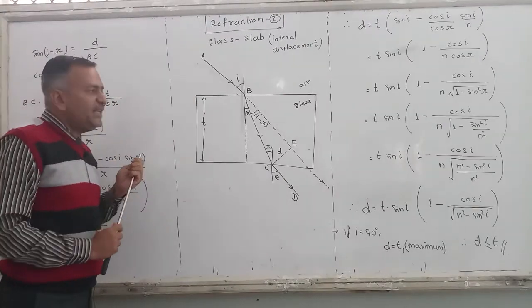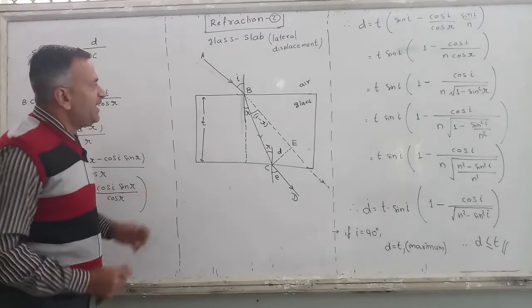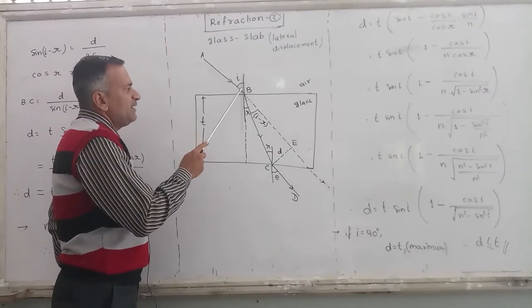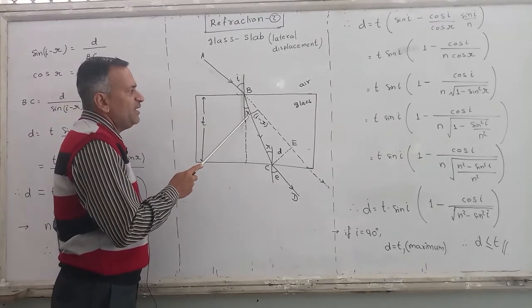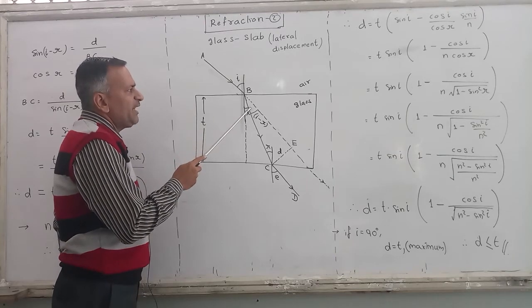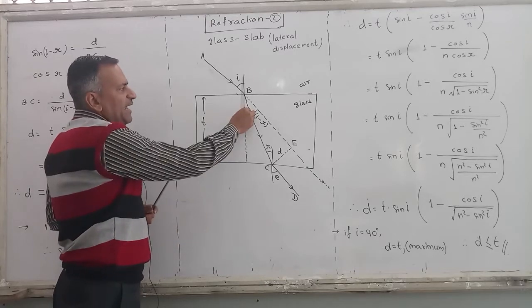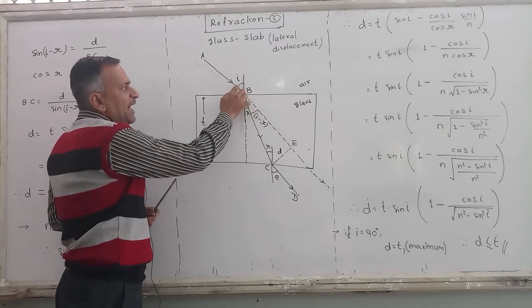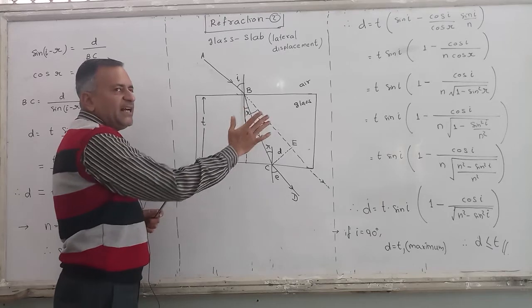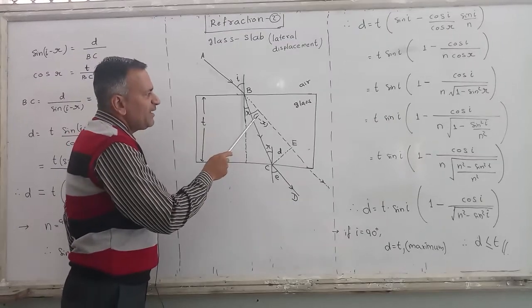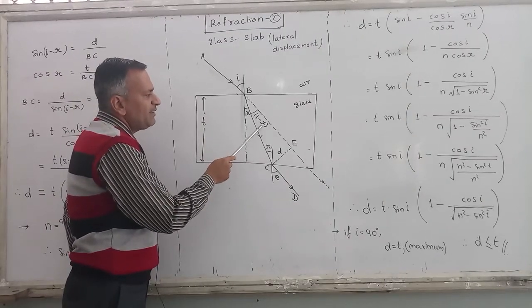I have marked some angles over here. So first concentrate on the diagram - angle of incidence, this is angle of refraction. Now see, these two are vertically opposite angles. That means this total angle should be equal to angle I out of which R has been removed. So this angle becomes angle I minus R.